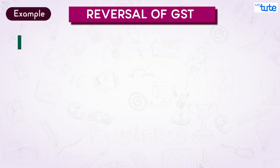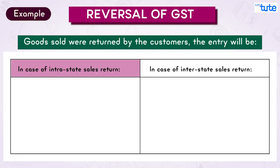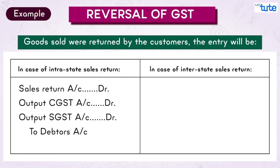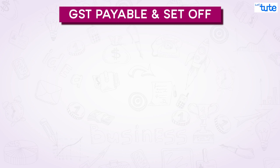For goods sold that are returned by the customer: in the case of intrastate sales return, the entry is Sales Return Account debit; Output CGST Account debit; Output SGST Account debit; To Debtors Account. If it is an interstate sales return, instead of CGST and SGST, we will debit Output IGST Account. We will understand more examples on this when we solve illustrations on journal entries with the GST concept.